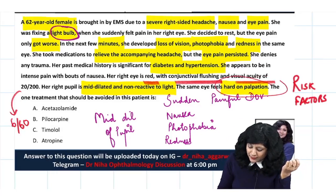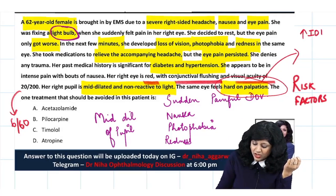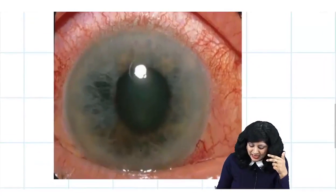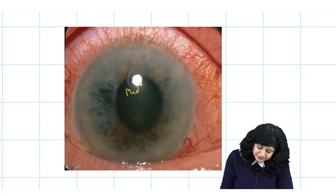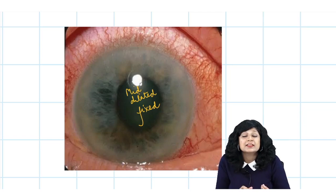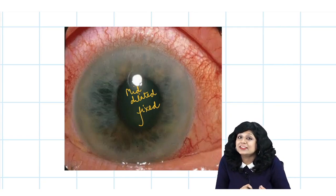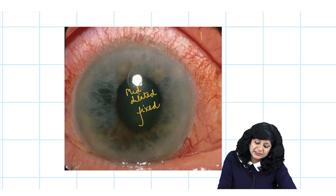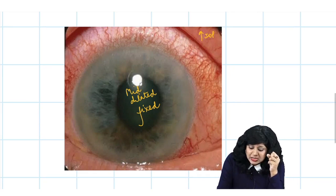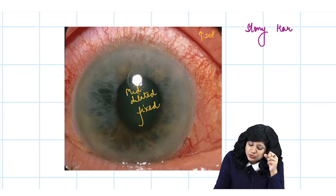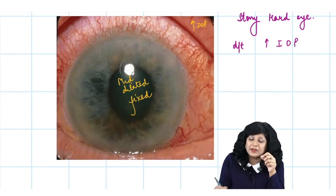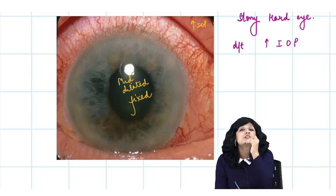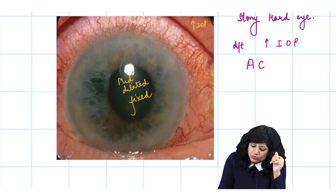A hard eye on palpation is an indicator of raised intraocular pressure. If you look at this eye — mid-dilated, fixed pupil, redness, painful diminution of vision, congestion, and hardness — that means raised intraocular pressure. When do you get a stony hard eye? You get it due to raised intraocular pressure, and in a very short span of time. So this is a case of acute congestive glaucoma.